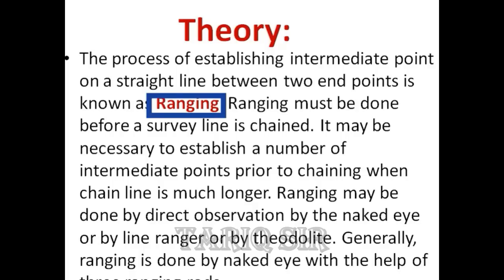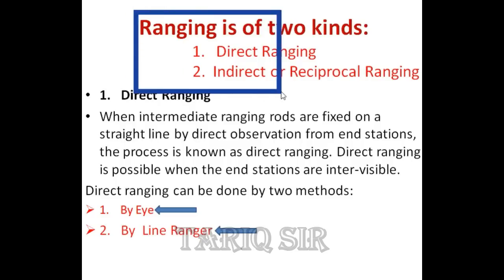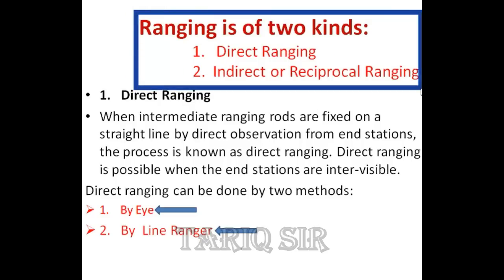Here we shall be using only two ranging rods. There are two kinds of ranging: one being direct ranging and the other being indirect, also called reciprocal ranging — we will cover that in another video. Under direct ranging we have two procedures: one is the eye method conducted in the last video, and here we will be discussing the line ranger and the procedure adopted in the line ranger method for performing ranging.